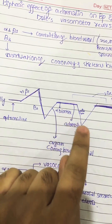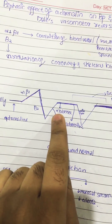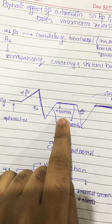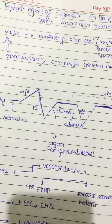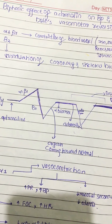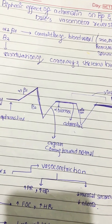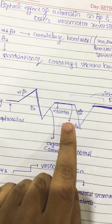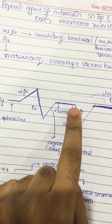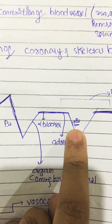Now, if we give an alpha blocker before administering adrenaline, the alpha blocker blocks the alpha receptors. So when adrenaline is administered, it cannot act on the alpha receptors because they are already blocked. Instead, adrenaline acts only on the beta-2 receptors.